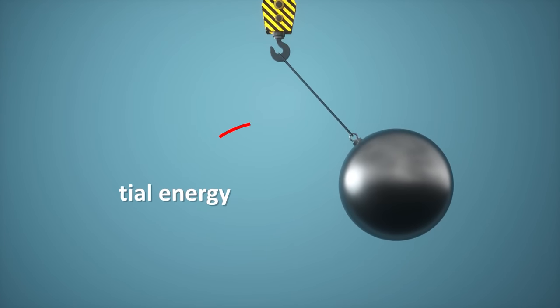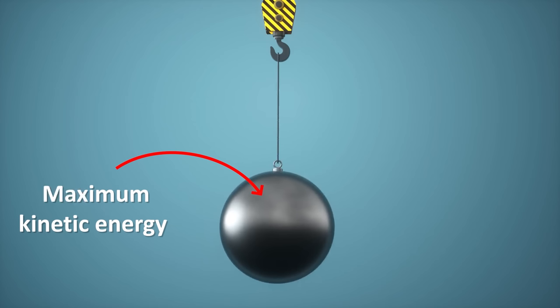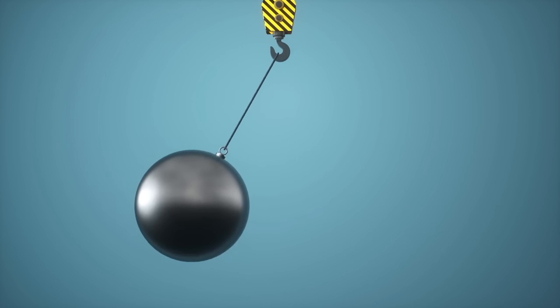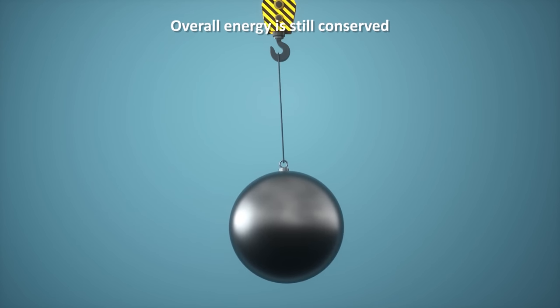Similarly, a swinging pendulum converts its gravitational potential energy when at its maximum height to kinetic energy at its lowest height. If there were no friction from the fulcrum or air, the pendulum could theoretically swing back and forth forever. But even with friction, overall energy is still conserved when you take the heat from the friction into account.